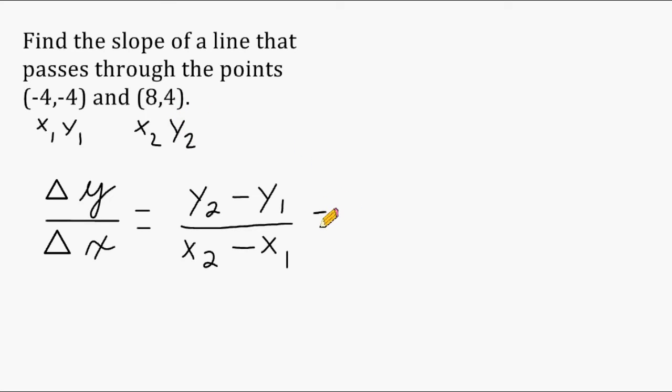Now what we can do is plug everything into the formula where it belongs. So we are going to start with our y2 which is going to be positive 4. After that we have to write the subtraction sign in our formula and then plug in whatever y1 is. And y1 is negative 4. Now we have to put our fraction bar here and substitute x2 with positive 8. And then we write a subtraction sign. And x1 is negative 4.